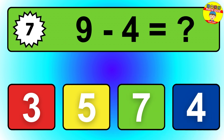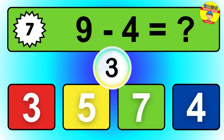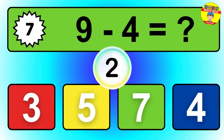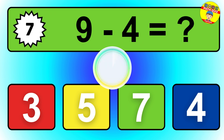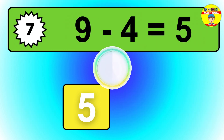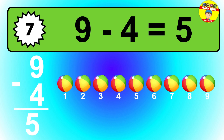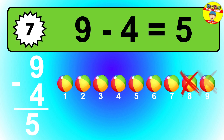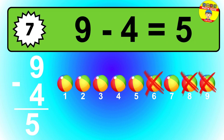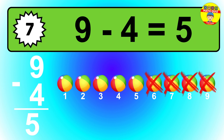Question 7. 9 minus 4 equals what? So the answer is 9 minus 4 is 5. Let's count it: 1, 2, 3, 4, 5.